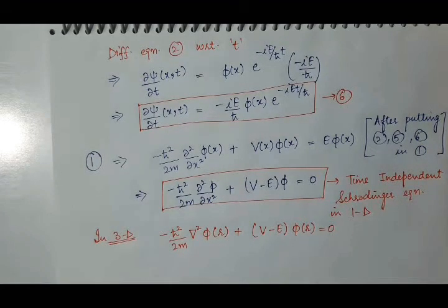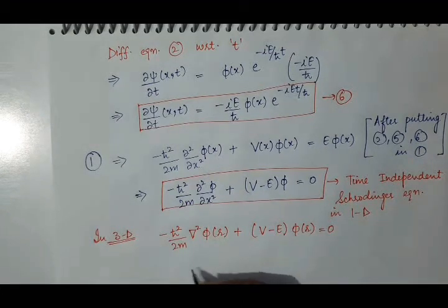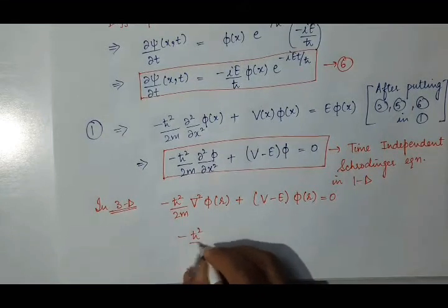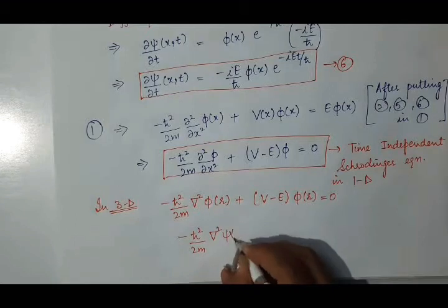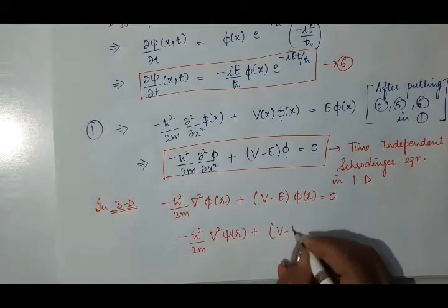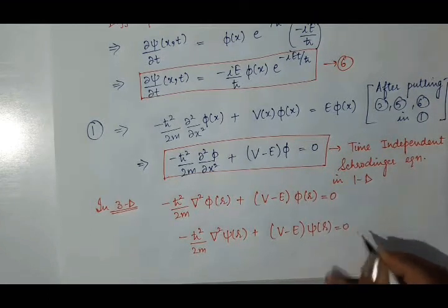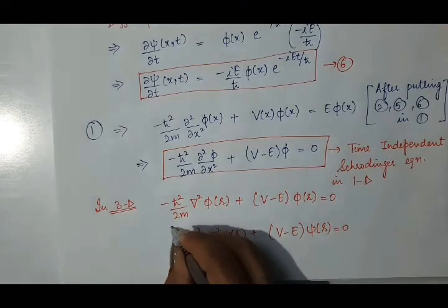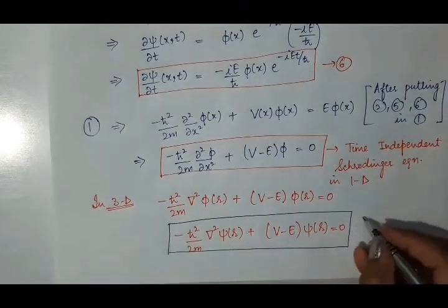You can also replace this phi by psi, and then this equation will be: minus h-cut square by 2m del square psi r, plus v minus e psi r, it is equal to 0. This is the time independent Schrödinger wave equation.